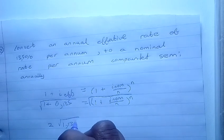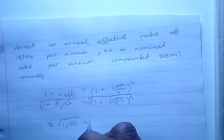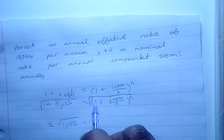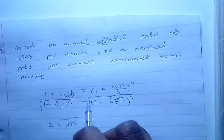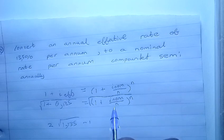So from there it's gonna be 2 times the square root of 1.135 minus 1, since we take this one to the other side, and we'll get the interest of nominal rate.